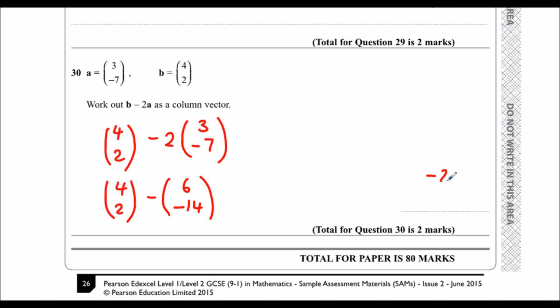4 minus 6 which is minus 2, and 2 minus minus 14, which is 16, because it means 2 plus 14.